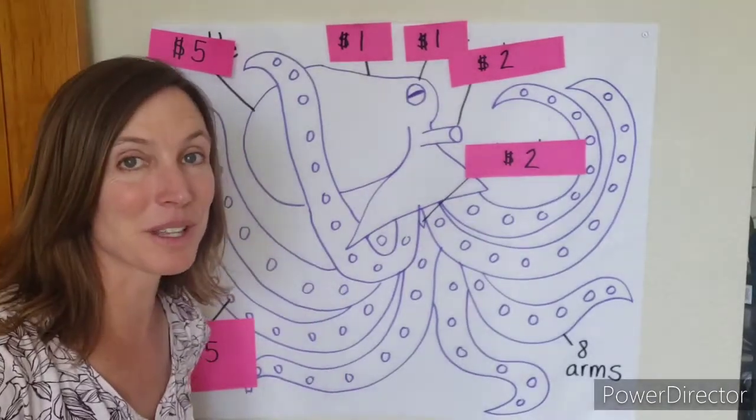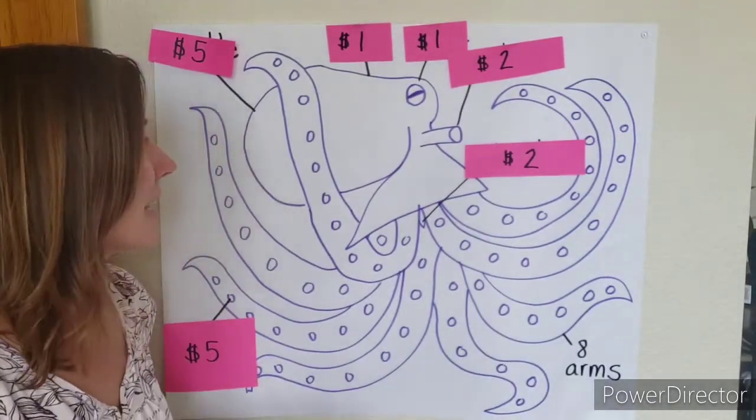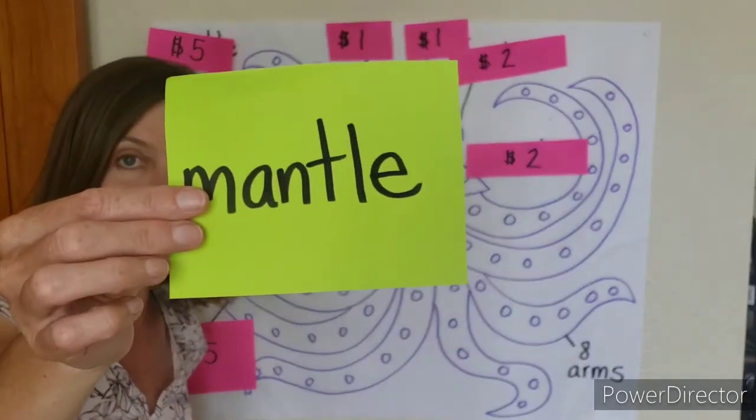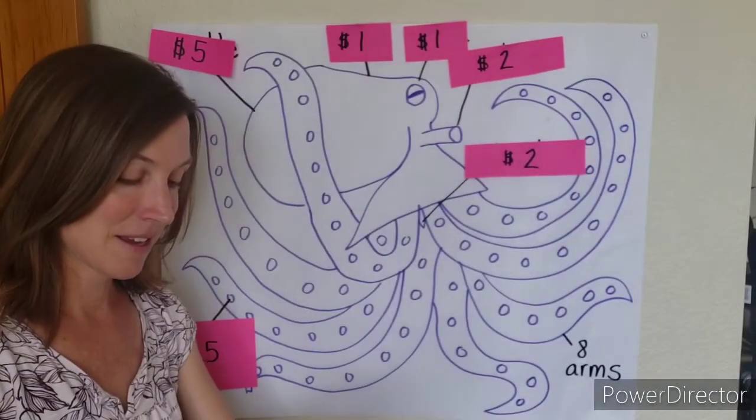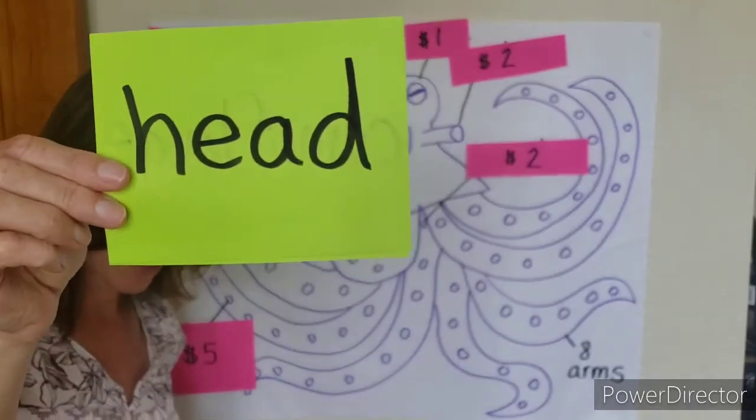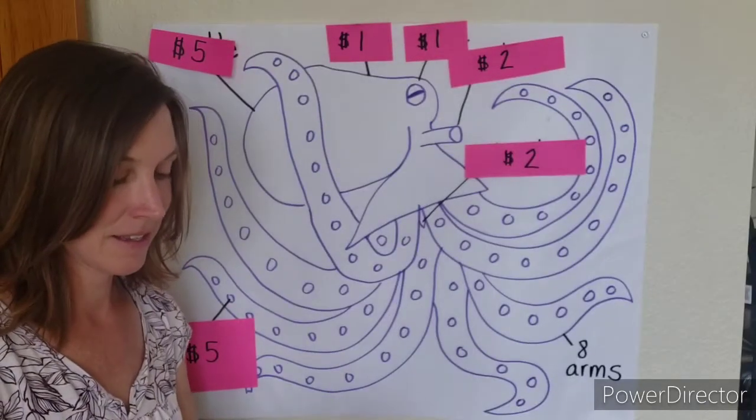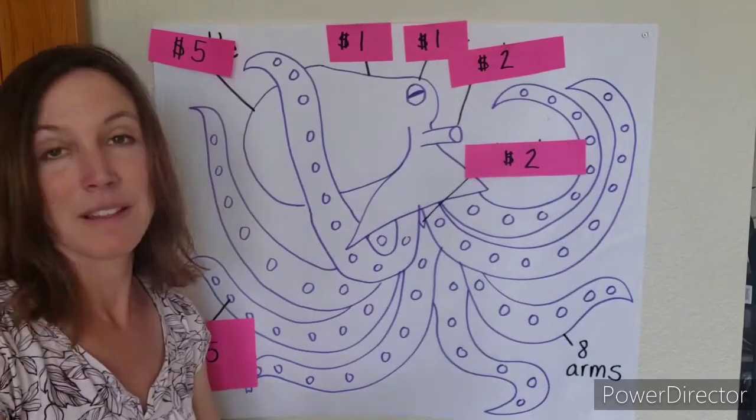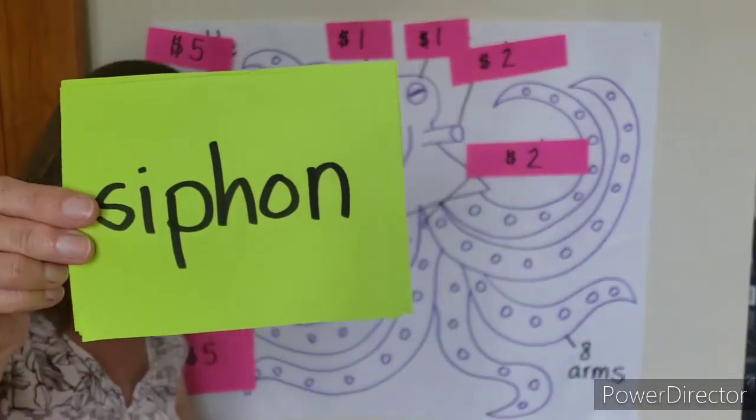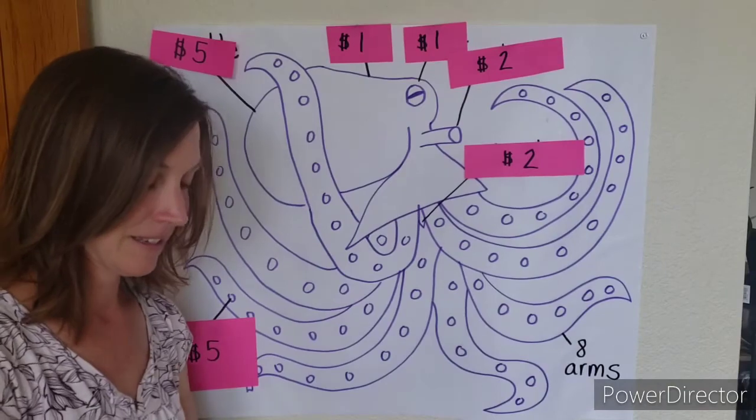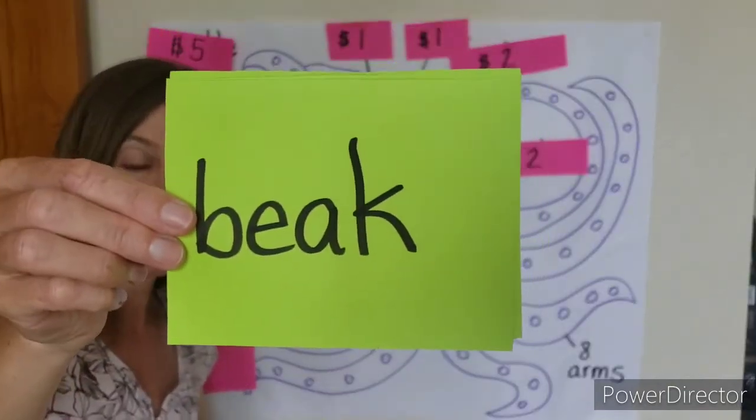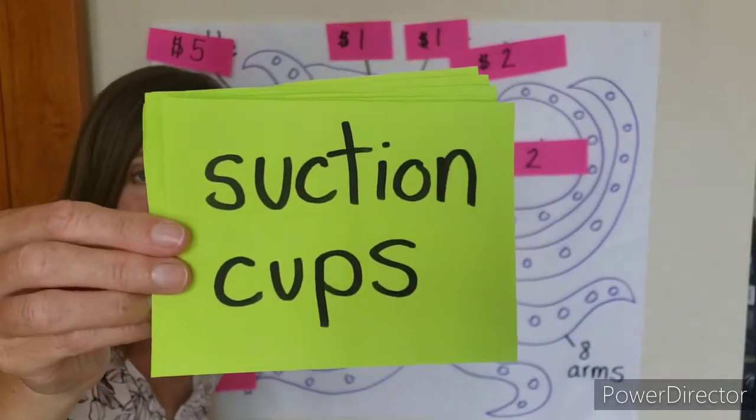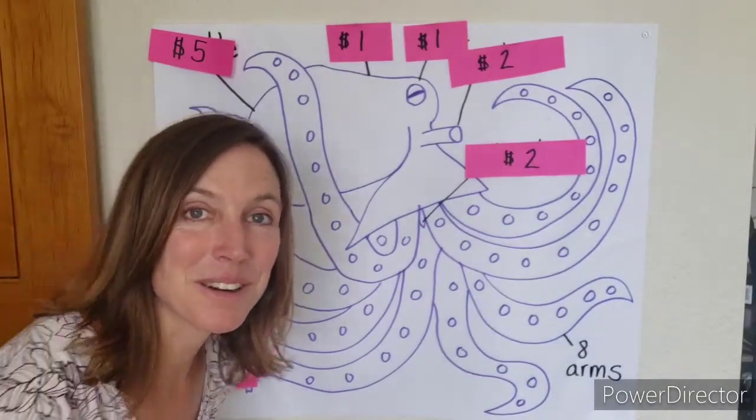...of the external features, the outside body parts. Some of the ones that I have hidden are the mantle, the head, the eye, the siphon, the beak, and suction cups. Are we ready to do the octopus quiz?